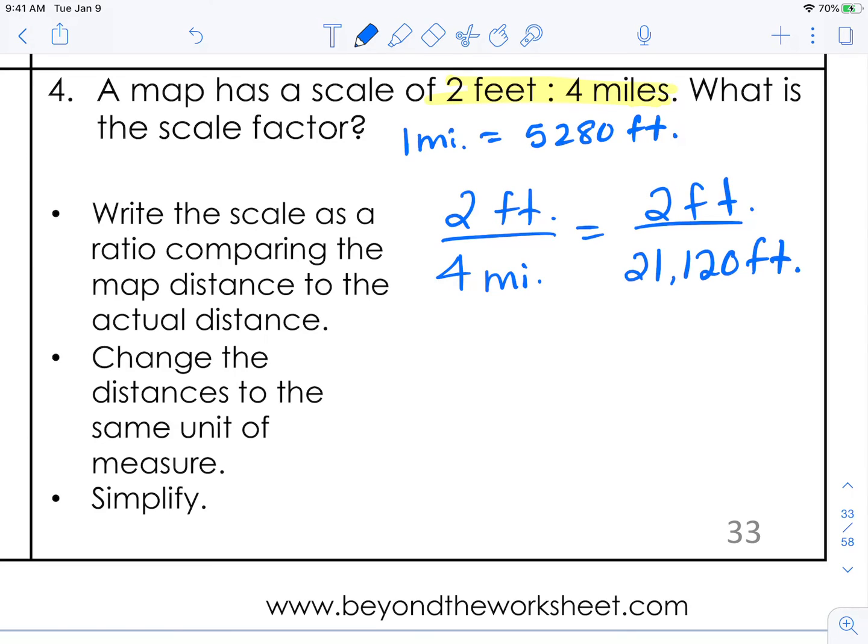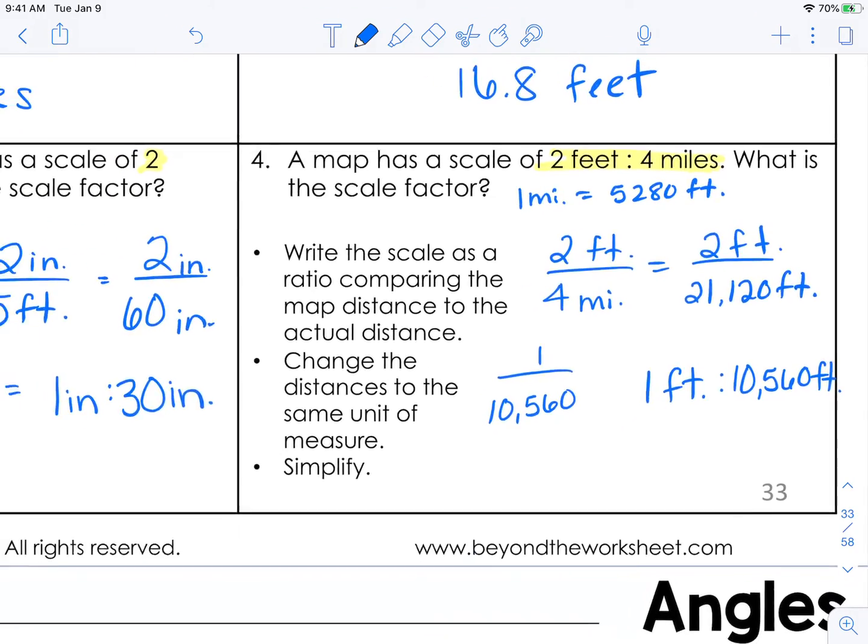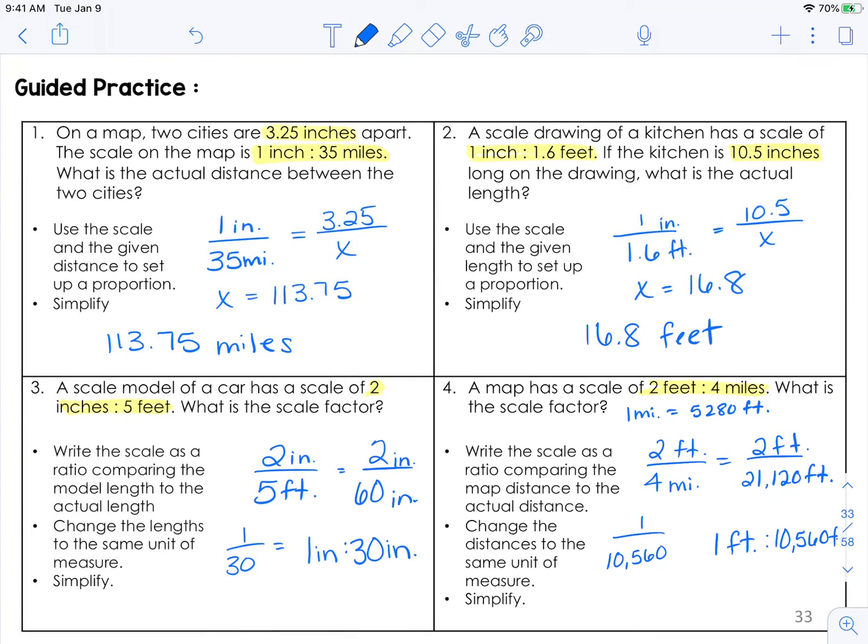But that can be simplified. So 21,120 and 2 can both be divided by 2. So we end up with 1 over 10,560. So the scale factor is that 1 foot is equivalent to 10,560 feet. And you might think that that seems really big. And maybe something's wrong. But remember that this is. You're talking about a map here. So with the map and actual distance. You are going to be looking at bigger numbers.